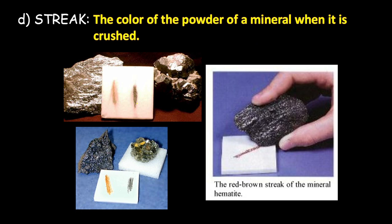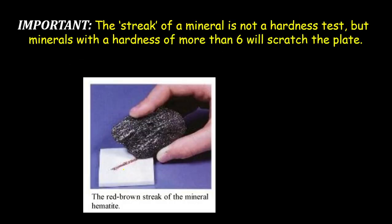The streak is unique to the mineral. One might have a lighter brown streak, another a black to dark brown streak — we can tell them apart. It is very important to remember that the streak of a mineral is not a hardness test — minerals with a hardness of more than 6 will actually scratch the plate. The streak plate is only used to see the mineral's powdered color.